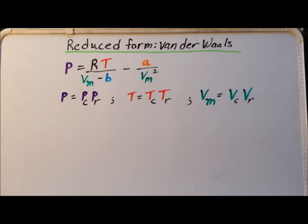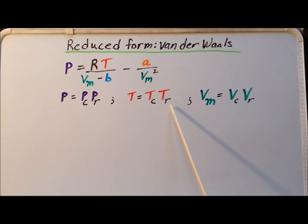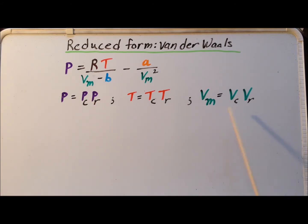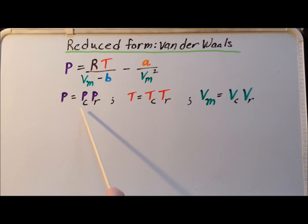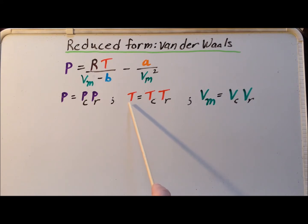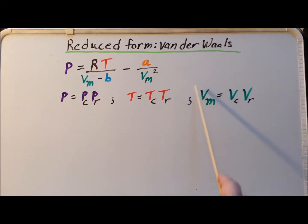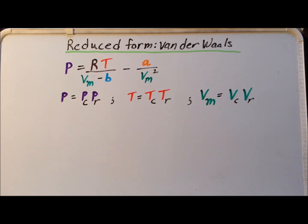We have the reduced forms of the relevant variables. So we have p sub r, the reduced pressure; t sub r, the reduced temperature; and v sub r, the reduced molar volume. These quantities are defined such that the real pressure p equals p sub c, the critical pressure, times the reduced pressure. The real temperature equals the critical temperature times the reduced temperature, and the real molar volume equals the critical volume times the reduced volume.